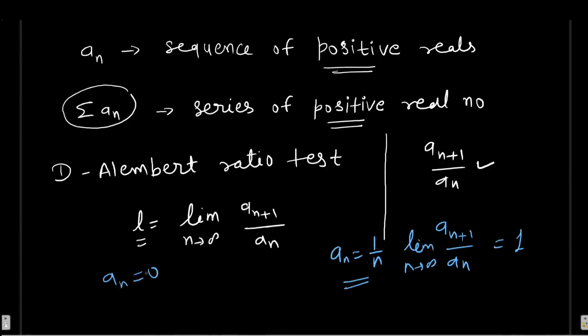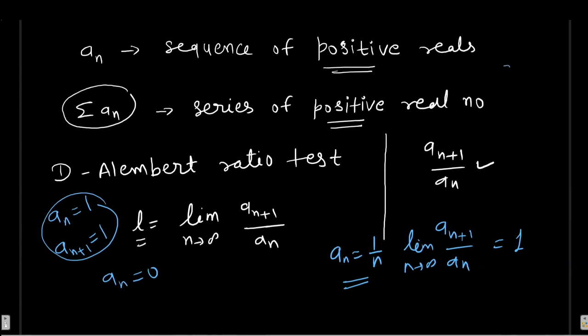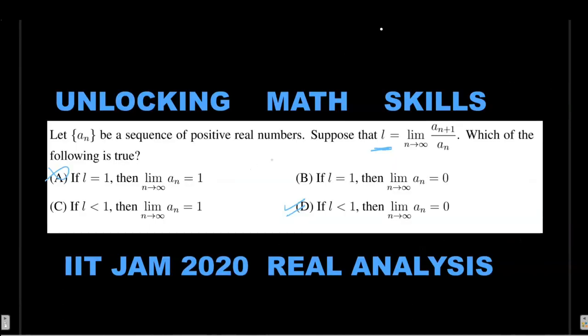For option B: if l equals 1, then limit of a_n equals 0. Consider a constant sequence where a_n equals k. Then a_(n+1) equals k, so a_(n+1) upon a_n equals 1. But the limit is k, not 0, so option B is wrong. Similarly, option C can be verified.